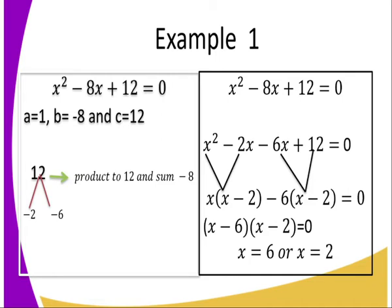Because the first bracket and the second bracket are the same, we put the factors in one bracket. That is (X minus 6)(X minus 2) equals 0. So we get the answers as X equals 6 and X equals 2.